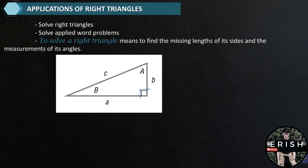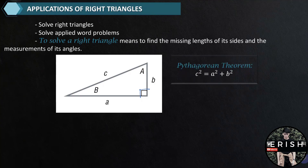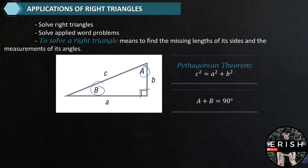To solve a right triangle, we need to know one of the acute angles A or B, and a side — or else, two sides. Then we will use the Pythagorean theorem. And since the sum of the angles of a triangle is 180 degrees, the sum of angles A and B in the right triangle is therefore 90 degrees, because the right angle is already 90 degrees.